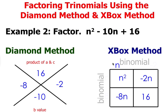Now think of what value times n will give you n². That value is n. n times n is n². Now think of what value times n will give you negative 2n.